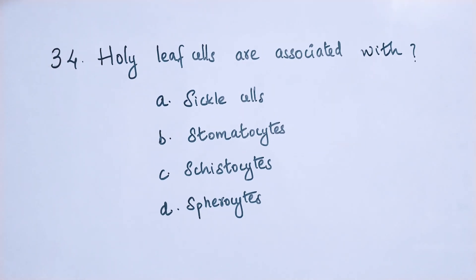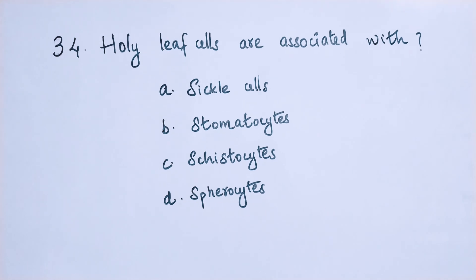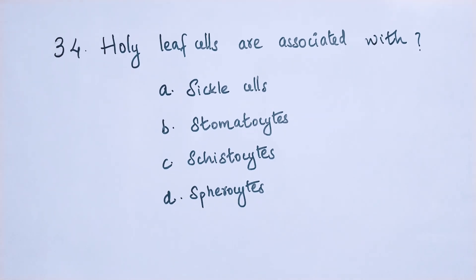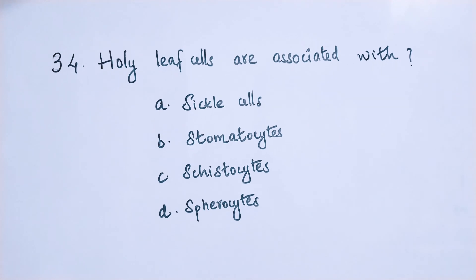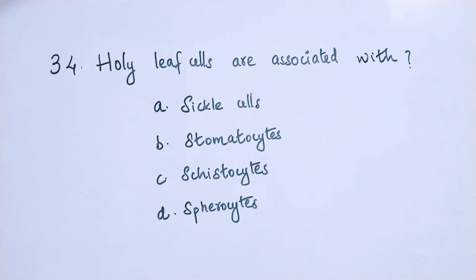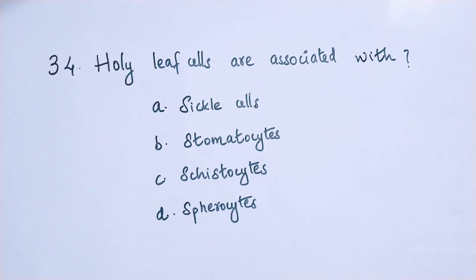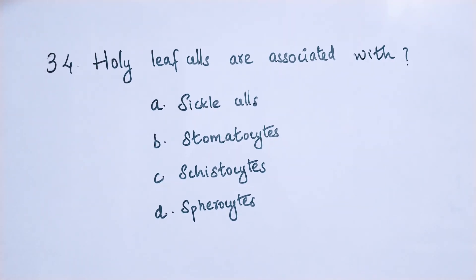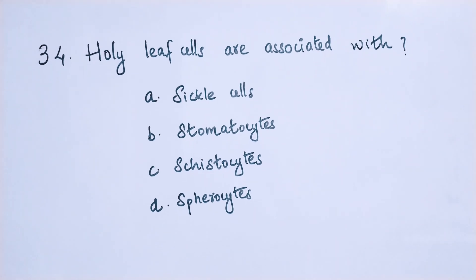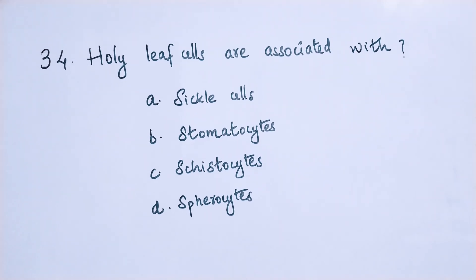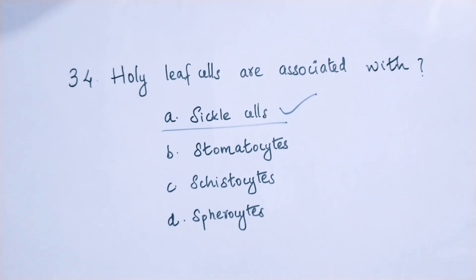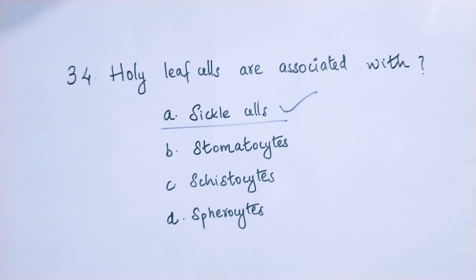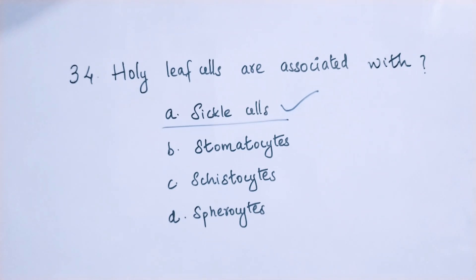Question number 34: Holly leaf cells are associated with option A: sickle cells, option B: stomatocytes, option C: schistocytes, option D: spherocytes. The right answer is option A — sickle cells. Sickle cells are otherwise called holly leaf cells.